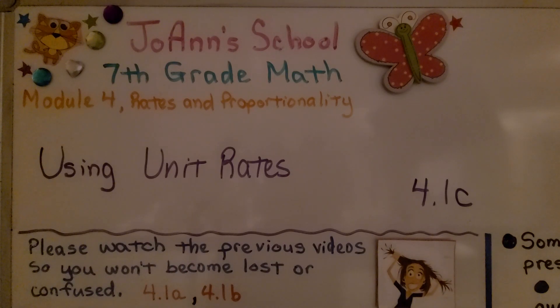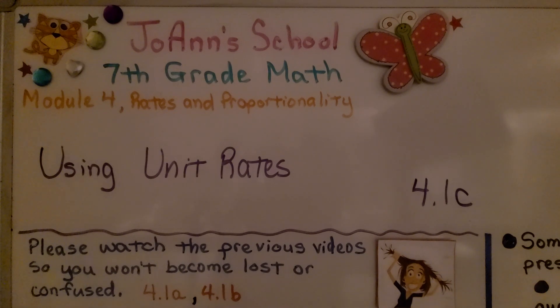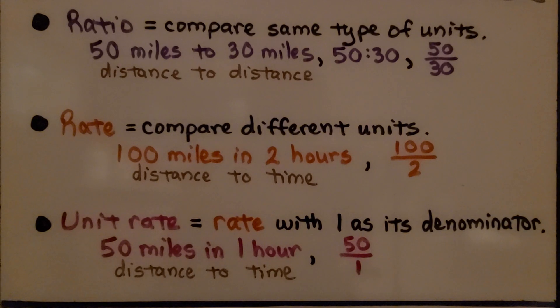We're at 4.1c using unit rates. 4.1a and b are linked in the description. We're going to start with a real quick review.